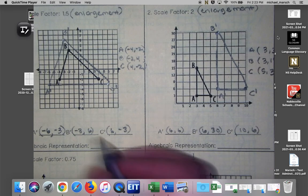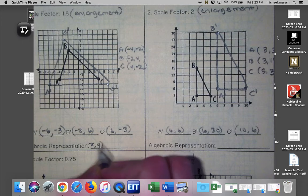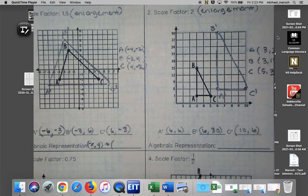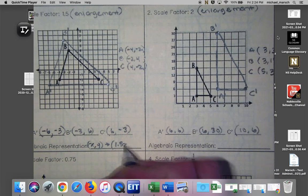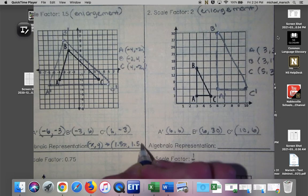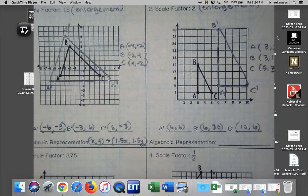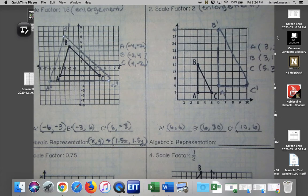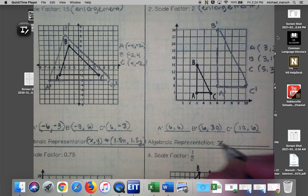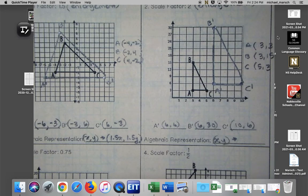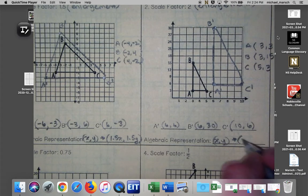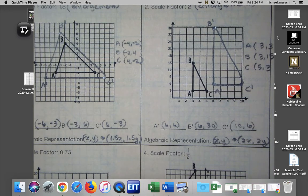Okay, we definitely forgot to do the algebraic representation for these. So I'm just going to tell you the algebraic representation. We start out with our original x, y. What did we multiply every value by? It's going to be 1.5x, 1.5y. That's how you got the new ordered pairs. We multiplied them by 1.5. What do you think the algebraic representation will be for number 2? 2x, 2y. Great job.